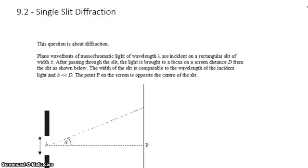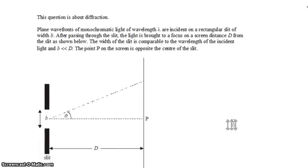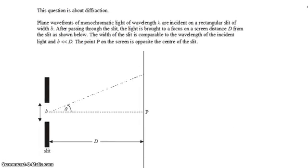David Kahn with an IB question here from topic 9.2. We're looking at single-slit diffraction. We have plane wavefronts of monochromatic light with wavelength lambda incident on a rectangular slit with width b.